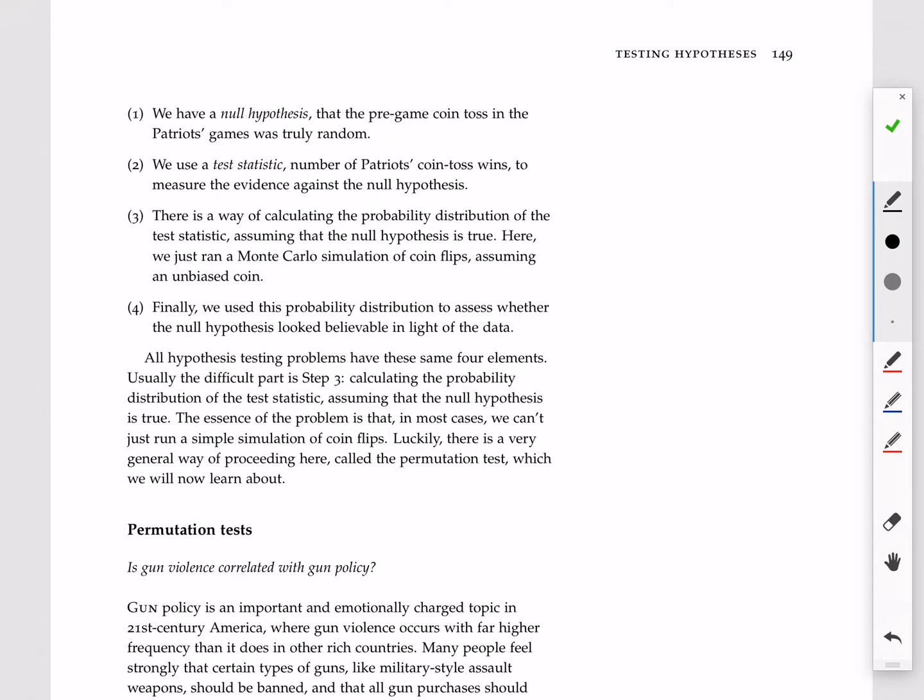Step one is to specify a null hypothesis. Step two is to specify a test statistic that is the measure of evidence in the data against the null hypothesis, where more extreme values of the test statistic indicate greater strength of evidence against that null hypothesis. Third, you have to calculate the probability distribution of that test statistic under the assumption that the null hypothesis is true. And then finally, you have to look at that probability distribution to give you some context for whether your observed data looks consistent or inconsistent, believable or not believable, under the assumption that the null hypothesis is true.